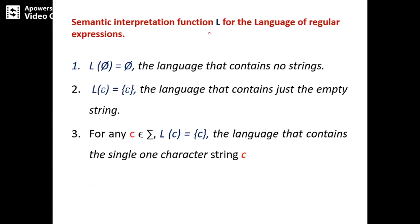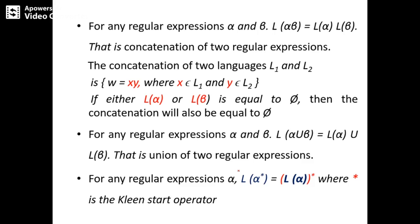Let's understand the semantic interpretation L. L(null) equals null — the language contains no string. L(epsilon) means the language contains just the empty string. If c belongs to the alphabet, then L(c) is the language containing just the single character string c. L(alpha·beta) equals L(alpha)·L(beta) — it is the concatenation of two regular expressions. If one of them is null, the entire result becomes null. L(alpha union beta) equals L(alpha) union L(beta), which is the union of the languages of alpha and beta.